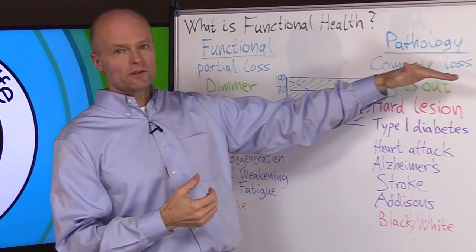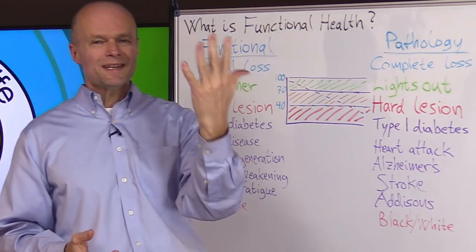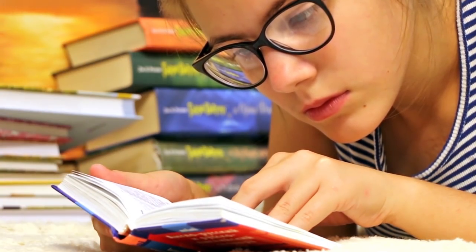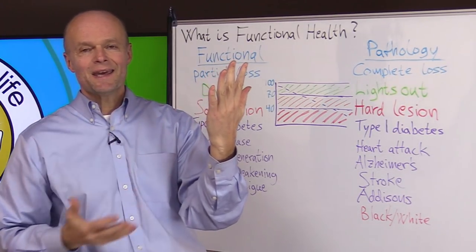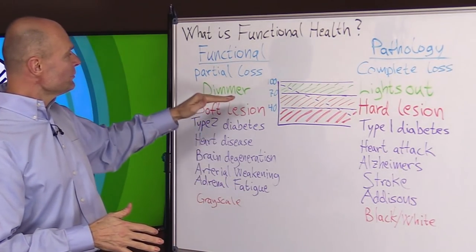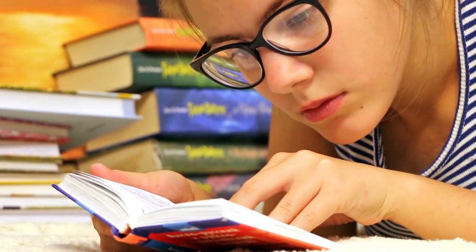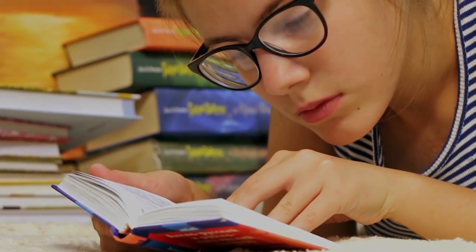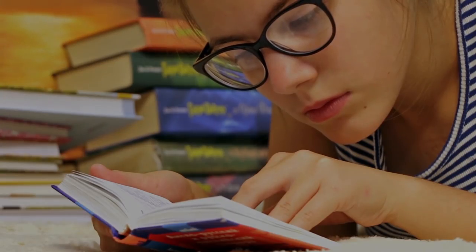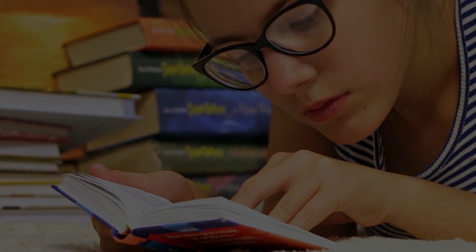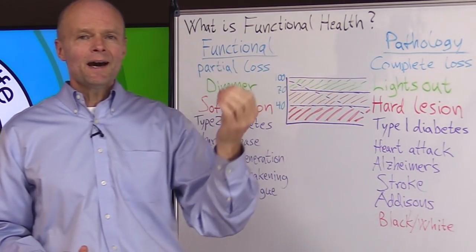Think of it in terms of light — you're trying to read something in fine print, and as long as you have really good light you can make out what it says. Then all of a sudden the light bulb goes out and the whole room is black; obviously you can't see anything. That's kind of what a pathology is — the function is gone. But if we think of it as a dimmer switch, someone starts turning it down from 100 to 90 to 80, and at 80 you're barely noticing any difference. Then down to 70, 60 — you start to notice a little but can still kind of make it work. Down to 50 it's difficult, 40 you're really struggling, 30 and you just can't make it out. That's kind of how health works as well.